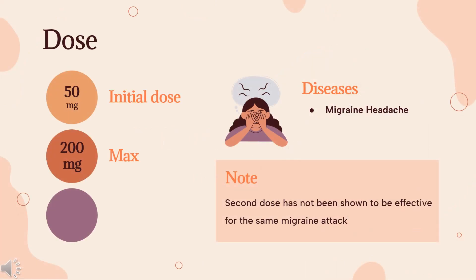Dose — Acute migraine. Indicated for treatment of acute migraine with or without aura. Doses of 50 mg, 100 mg, or 200 mg taken orally as needed. Not to exceed more than one dose per 24 hours. Do not take unless the patient can wait at least 8 hours between dosing and driving or operating machinery. A second dose has not been shown to be effective for the same migraine attack. The safety of treating an average of more than 4 migraine attacks per 30 days has not been established.